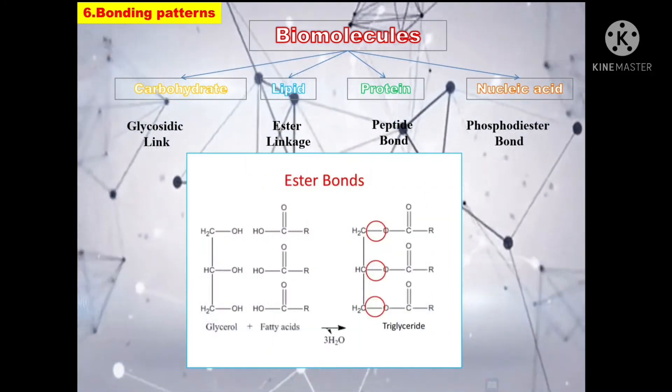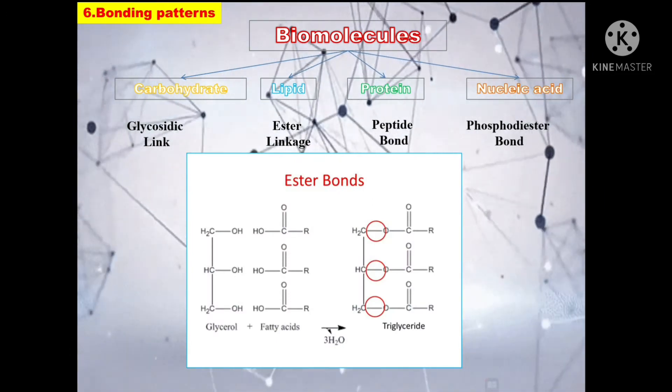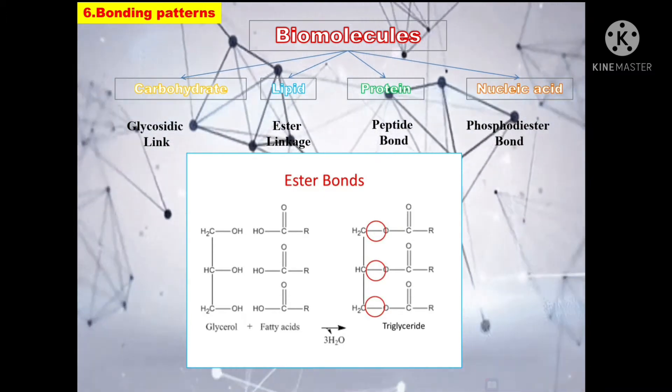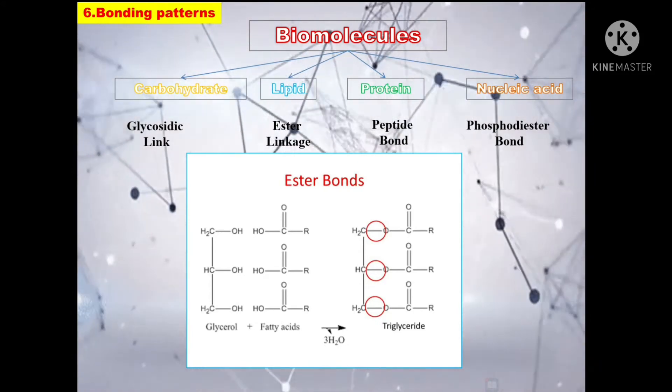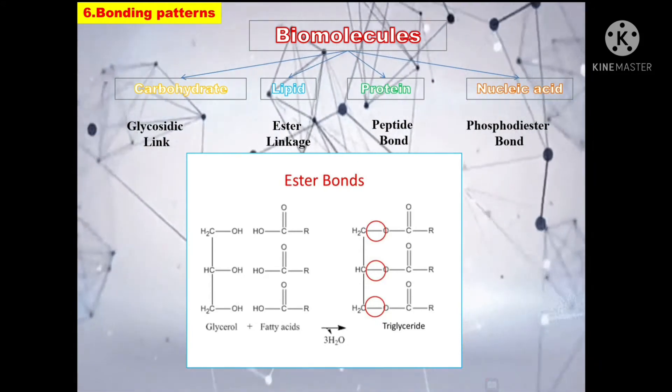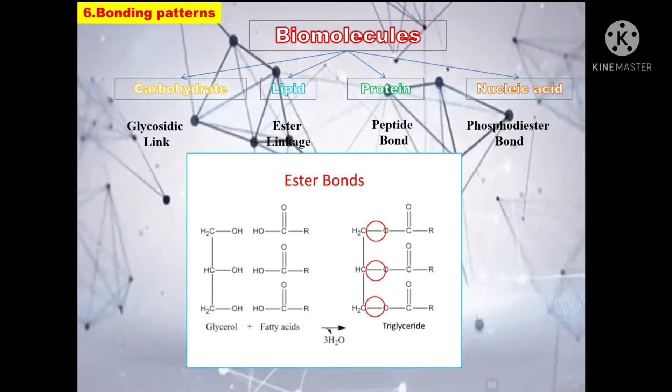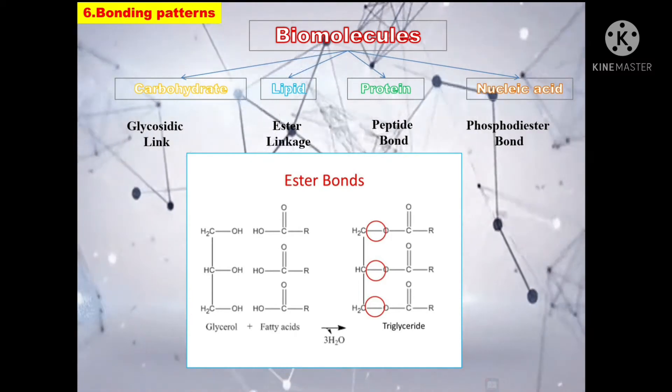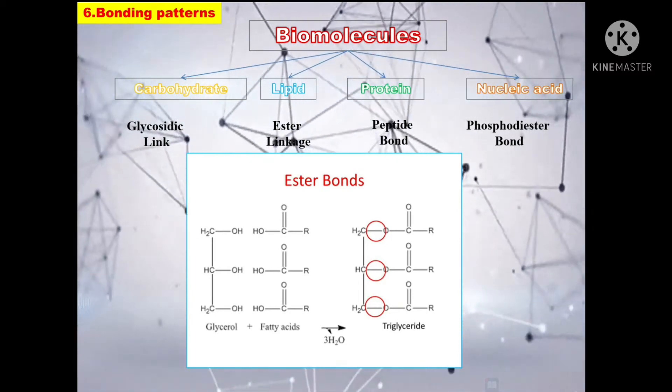Next, we look into the lipid. A fat molecule consists of two main components, glycerol and fatty acids. Glycerol is an organic compound with three carbon atoms, five hydrogen atoms and three hydroxyl groups. Fatty acids have a long chain of hydrocarbons to which an acidic carboxyl group is attached.